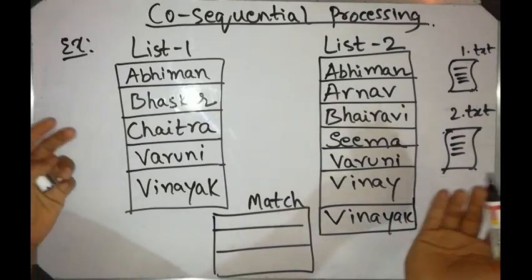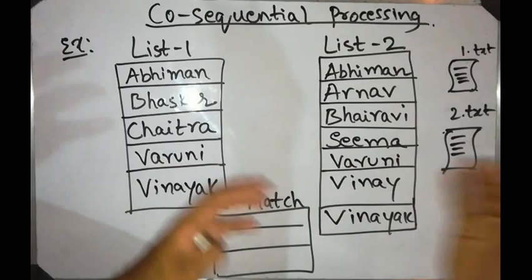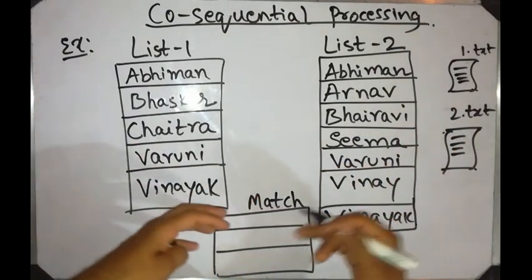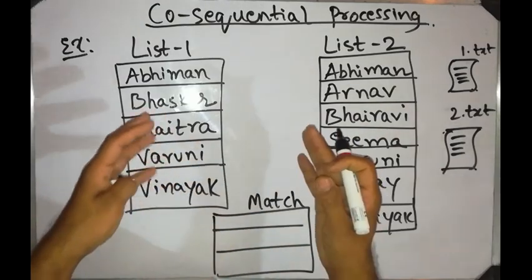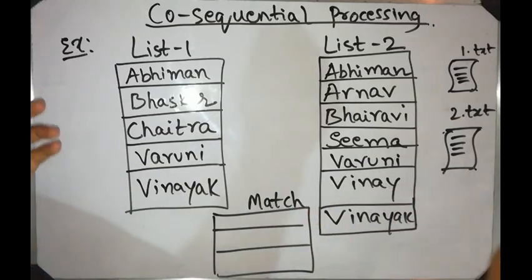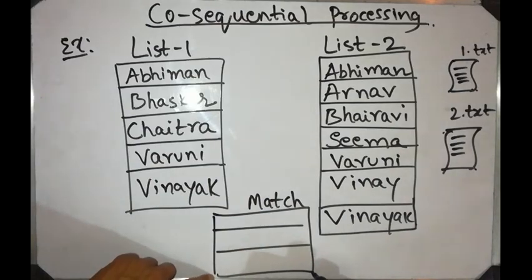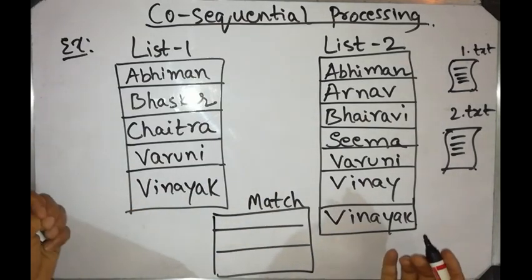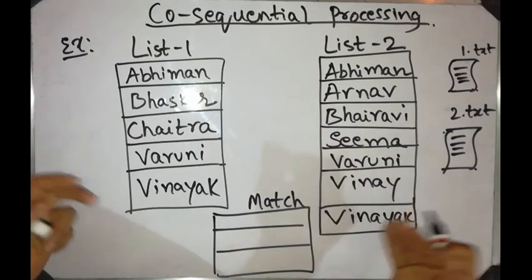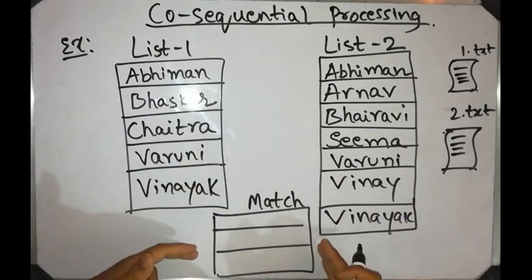Co-sequential processing is about sequentially processing two different lists, or two or more lists. In the next lab program, we are going to see something called a sequential merge. This seventh program is about matching all the names that are there in two different lists and coming up with something called a match list. There are many applications where we need to match names in two different lists and produce a match list.